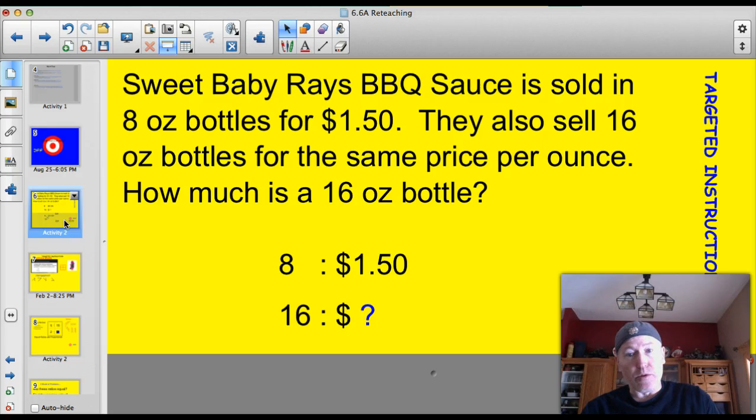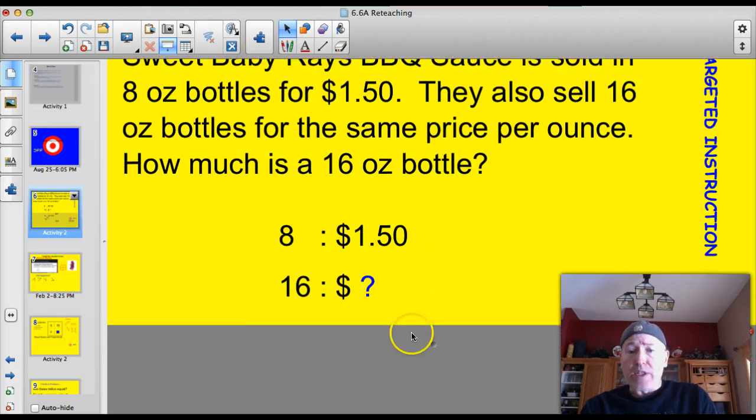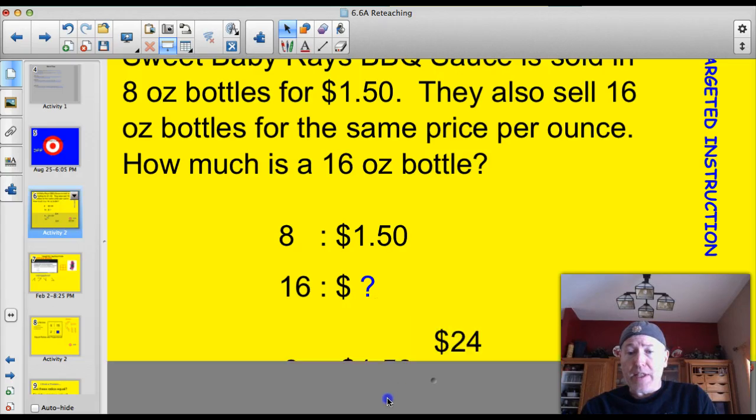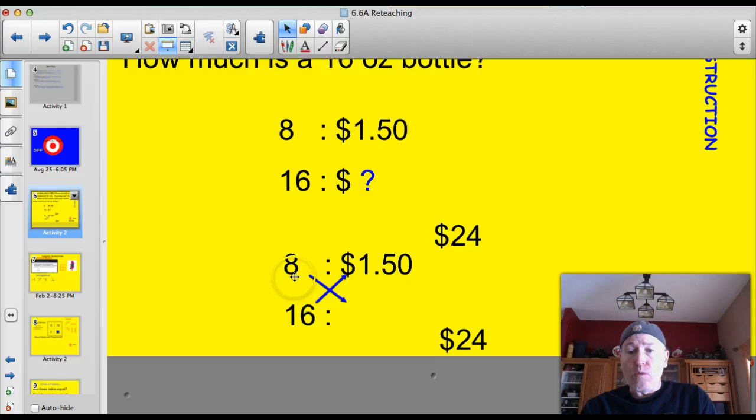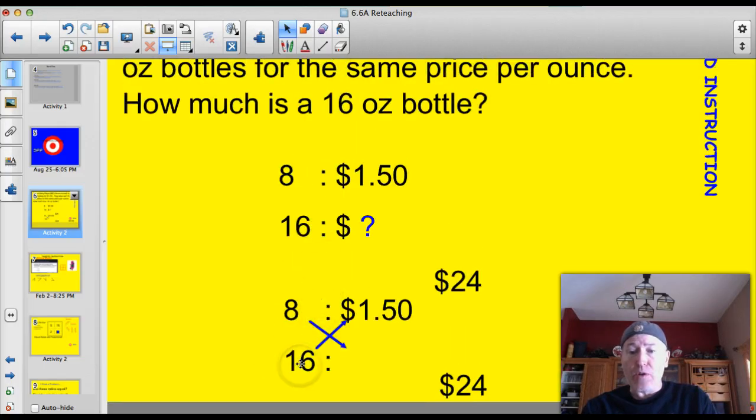Let's start with the problem, as always. Sweet Baby Ray's barbecue sauce, the best barbecue sauce, is sold in 8-ounce bottles for $1.50. They also sell 16-ounce bottles for the same price per ounce. How much is a 16-ounce bottle? These are the type of problems we're going to be solving tonight. Well, we've learned in earlier lessons that when you set up two ratios like this, the cross-products will be equal.